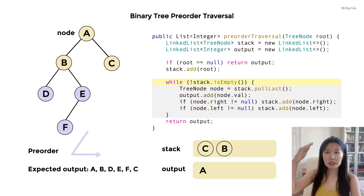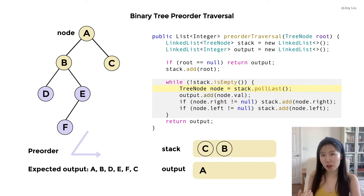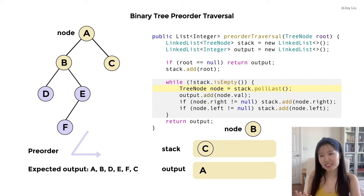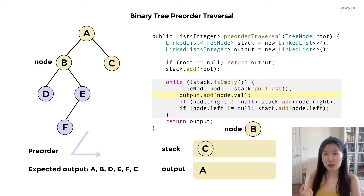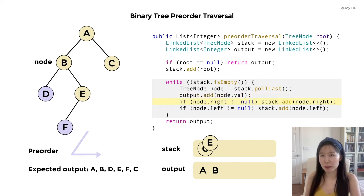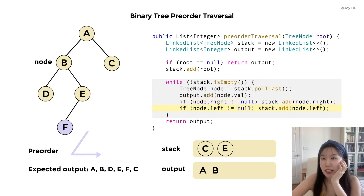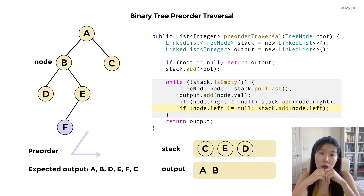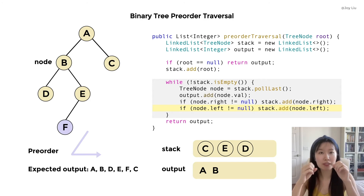Next, we go back to the beginning of the while loop. The stack is not empty, so we pull the last element out and delete it from the stack. We give this element a name: node. Now node switches from A to B. We get the value of this node and add it to the output. We check if the node has the right child — yes, so we add node E to the working memory stack. Then we check if node has the left child — yes, so we add node D to the working memory stack. If you notice the order, we always add the left node after the right node. In this way, we can always retrieve the left node first.